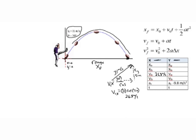For the y side, vi in the y direction is going to be 31 meters per second times the sine of 30 degrees, and that gives us 15.5 meters per second. So I'm going to fill that in on the y side of our table.